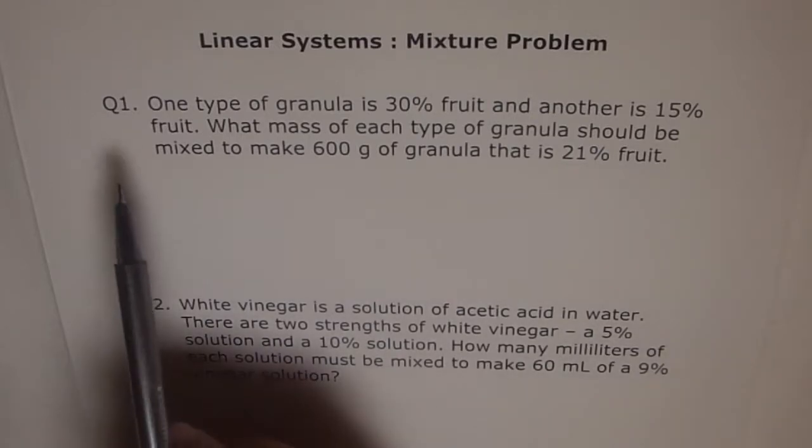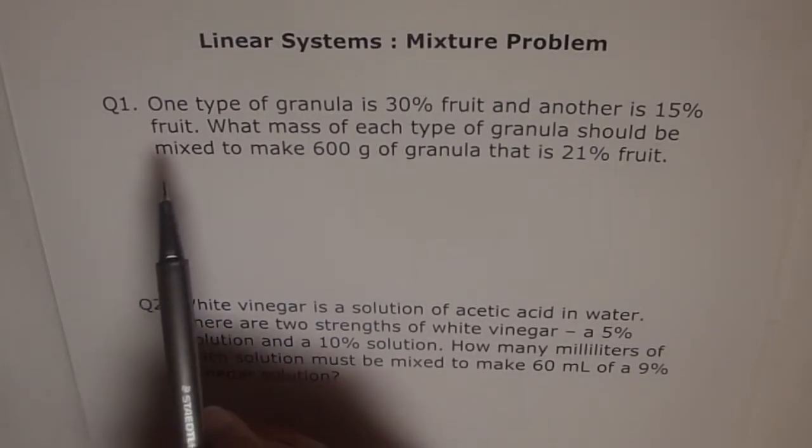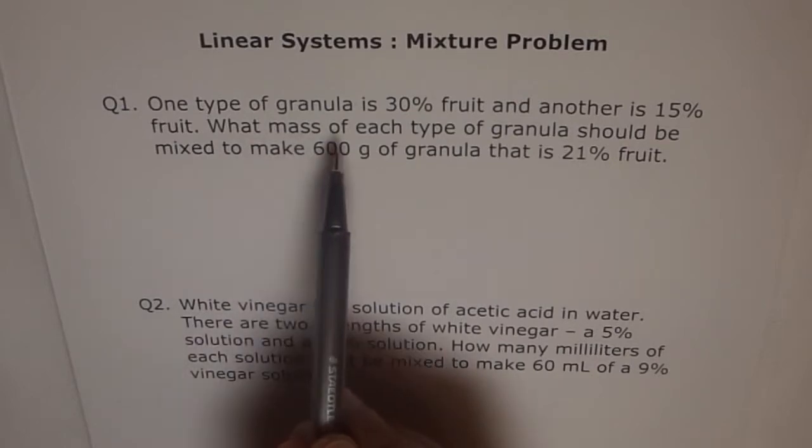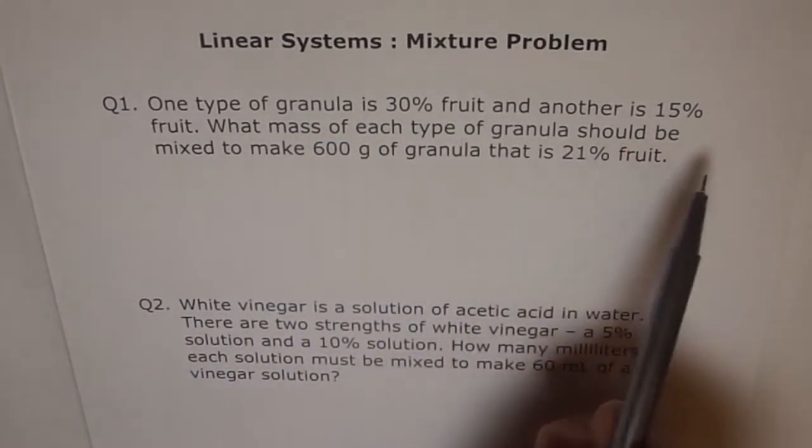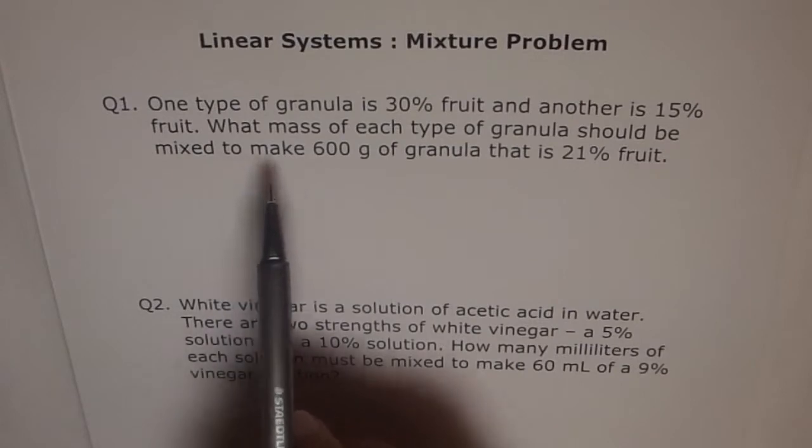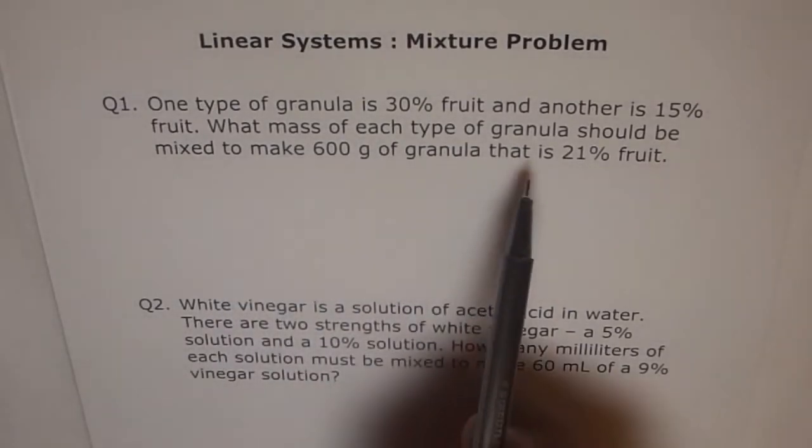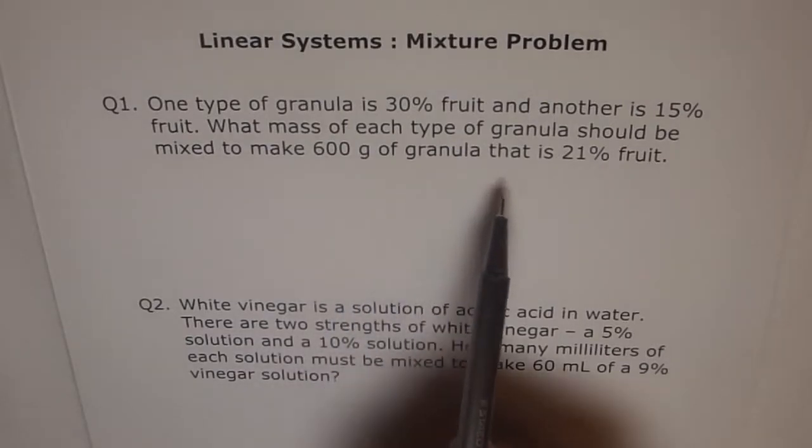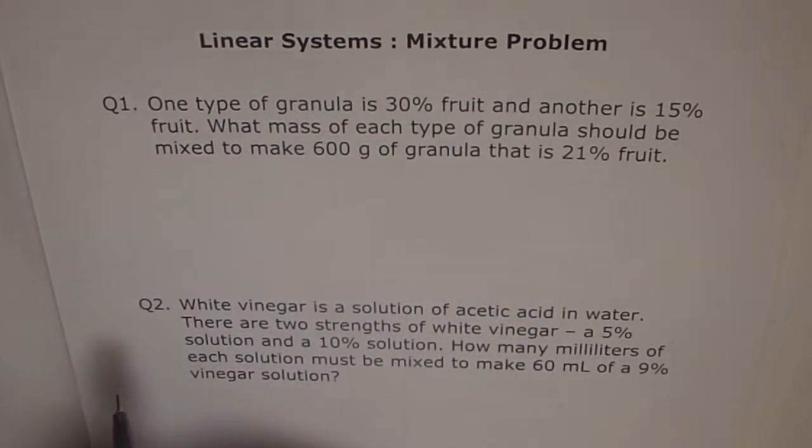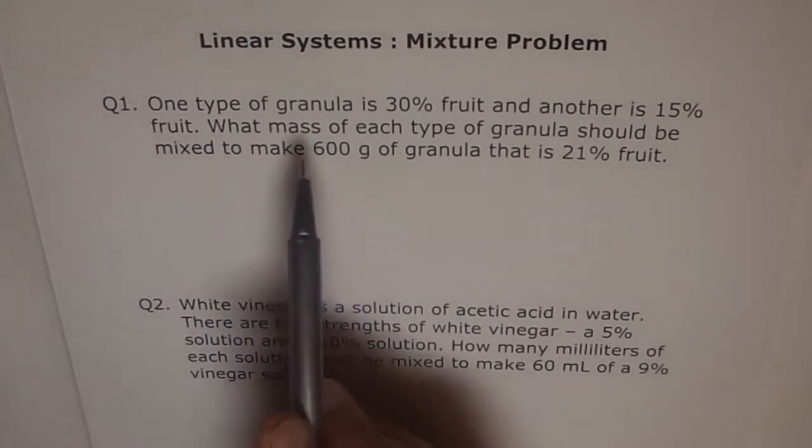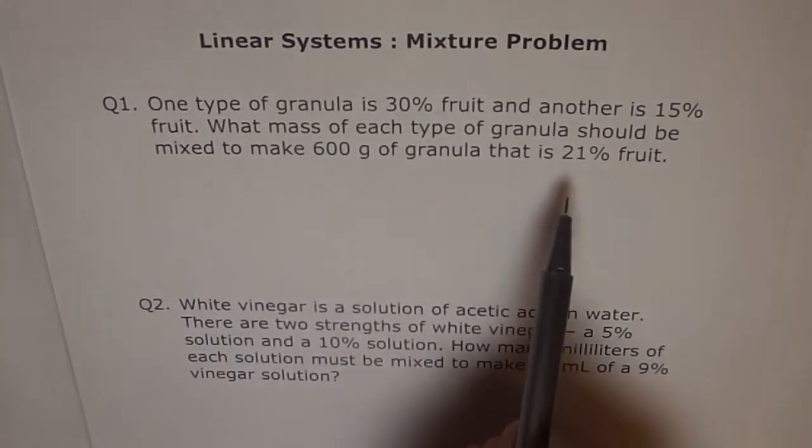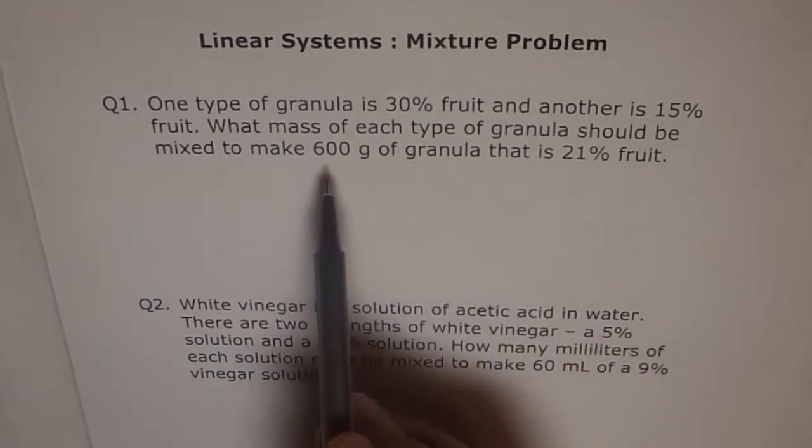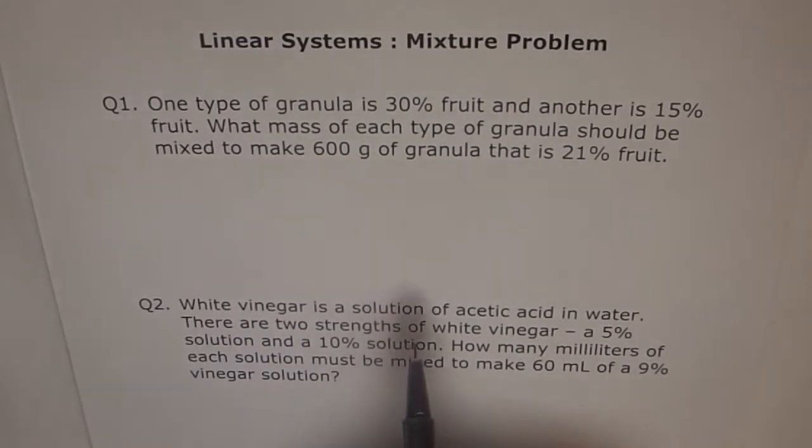So let's go through these questions. The first one: one type of granula is 30% fruit and another is 15% fruit. What mass of each type of granula should be mixed to make 600 grams of granula that is 21% fruit? So here we want to mix two types of granulas and get a third type where the percentage of fruit is in between the first two, and we also want a quantity of 600 grams.